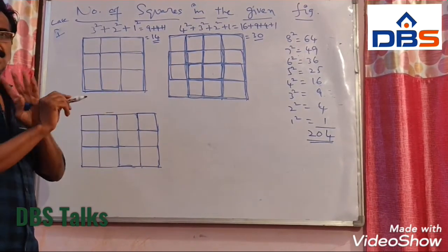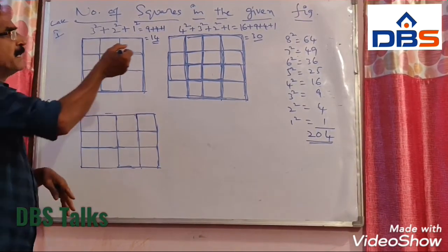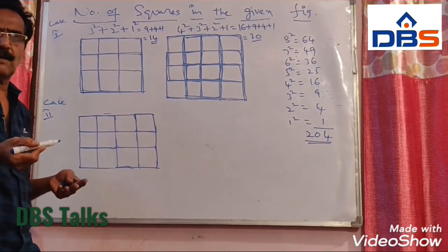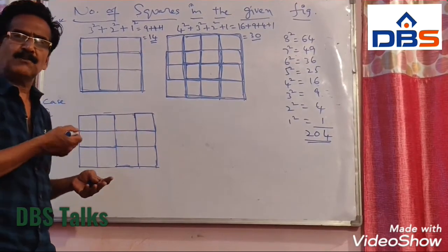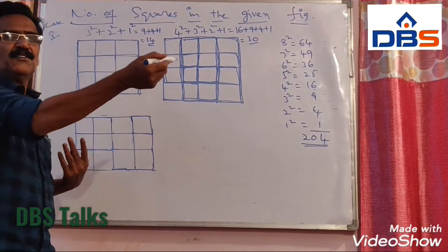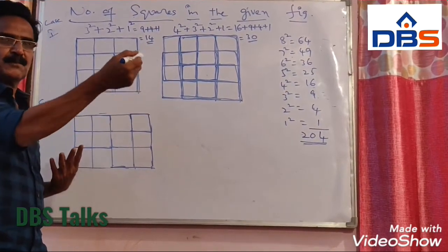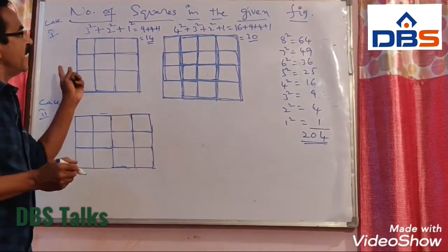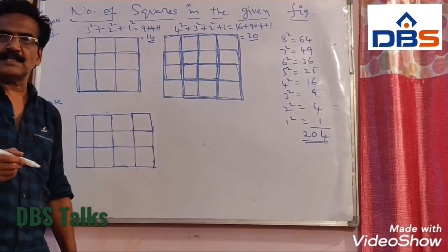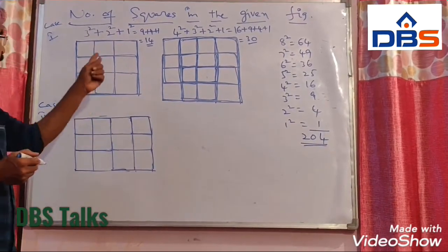This is the case where rows and columns are equal. We do not count the number of squares — we simply apply the formula. When there are 5 rows and 5 columns, then we go from 5 squared plus 4 squared plus 3 squared plus 2 squared plus 1 squared. In the first case, we can count the number of squares in that manner.